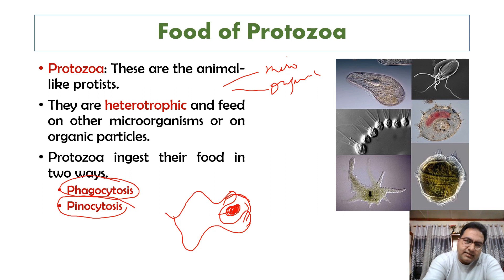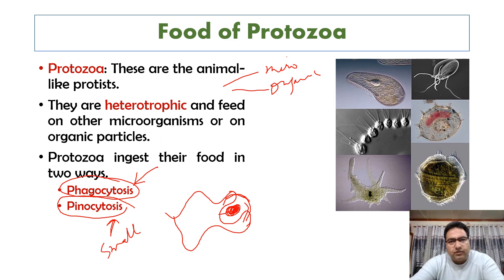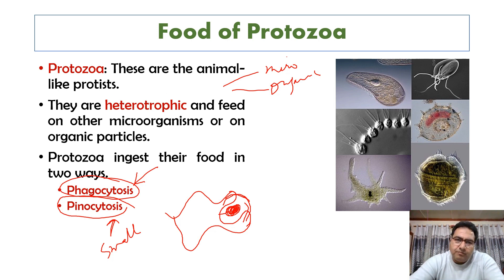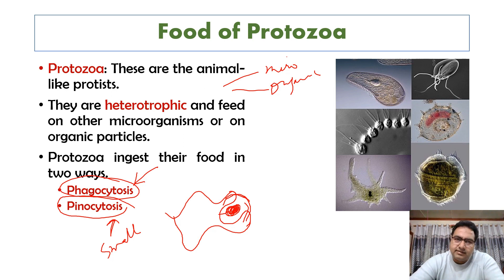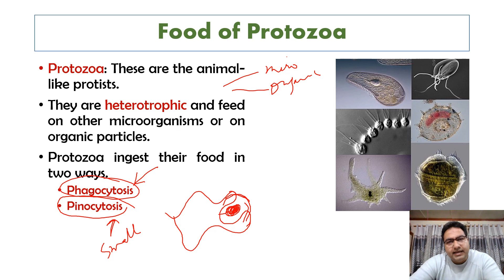Smaller particles are ingested by pinocytosis. In this process, the particle is sucked into an invagination in the cell membrane, which then folds in on itself and pinches off to become a smaller vacuole. We call pinocytosis 'cell drinking' and phagocytosis 'cell eating.'